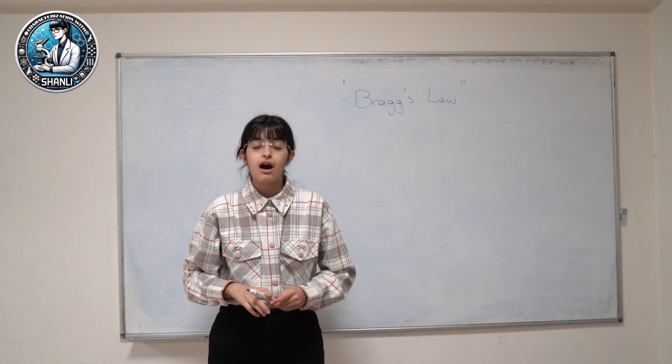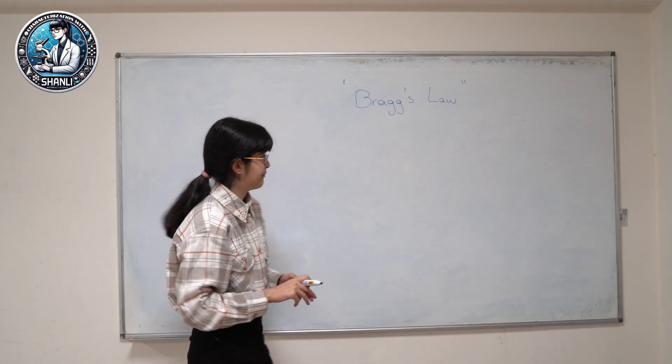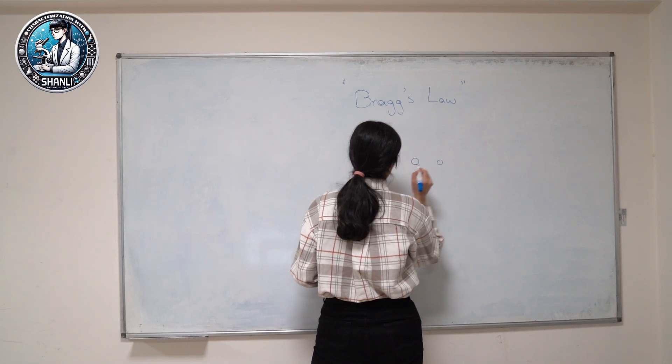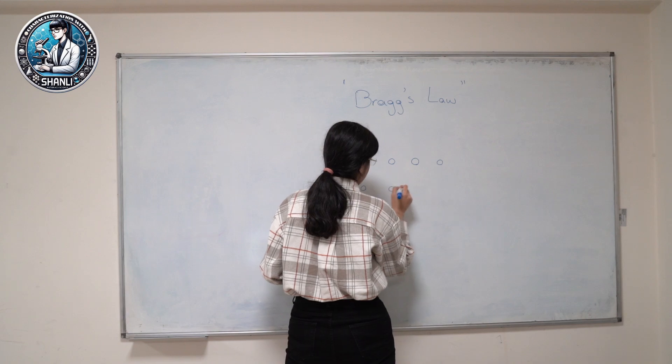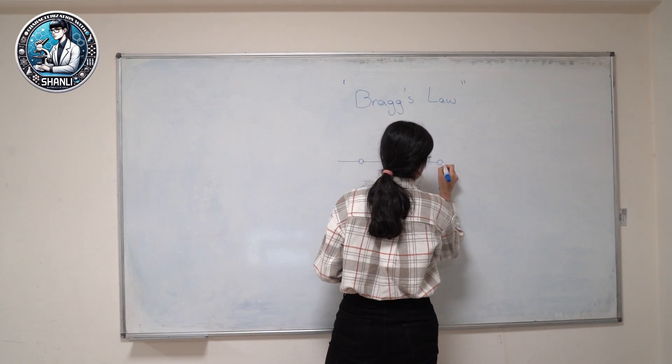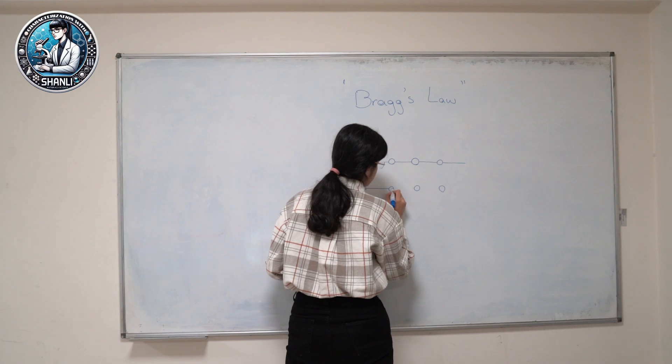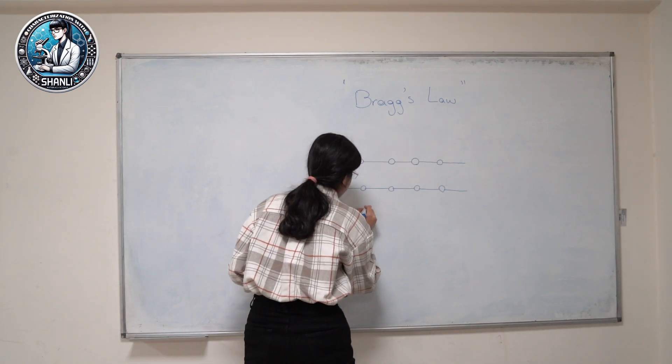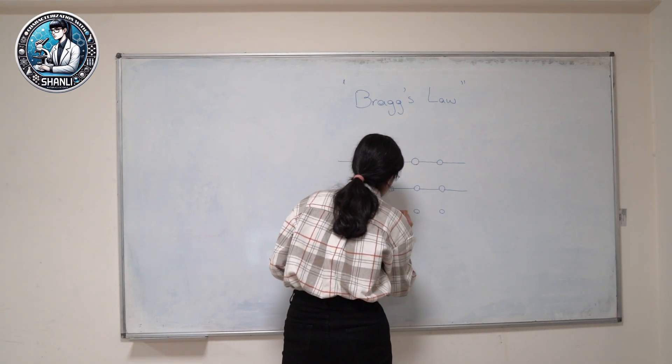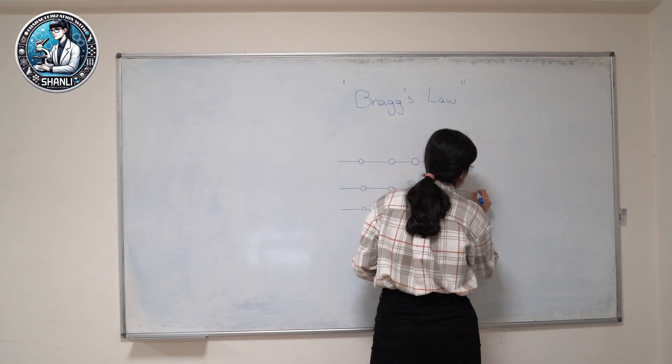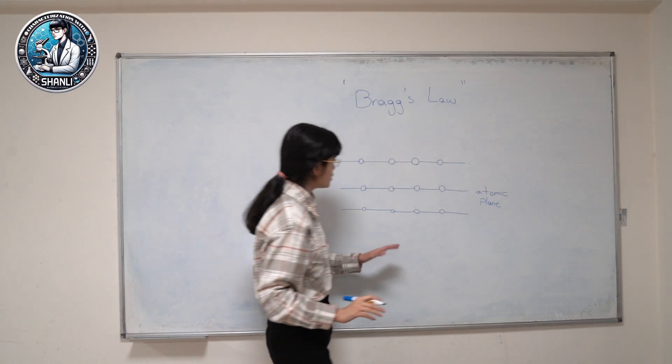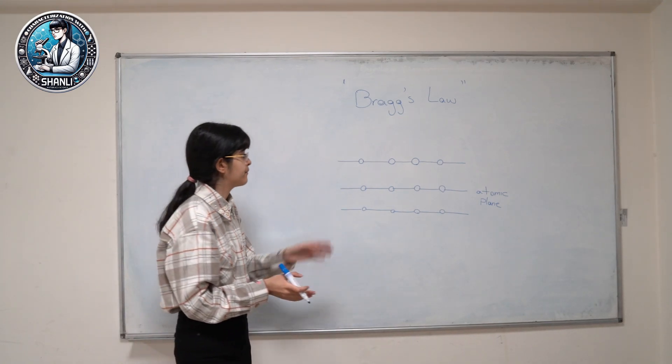For explaining Bragg's law, I want to start with drawing the atomic planes. So let's imagine these circular shapes be our atoms which are arranged on our atomic plates. Please consider this picture as our atomic plane.